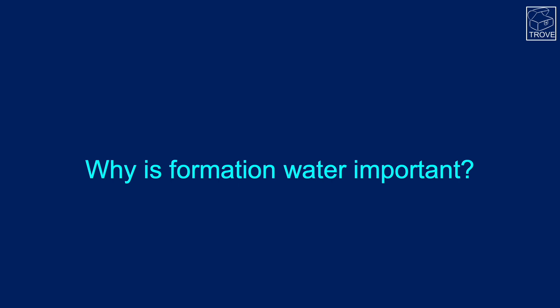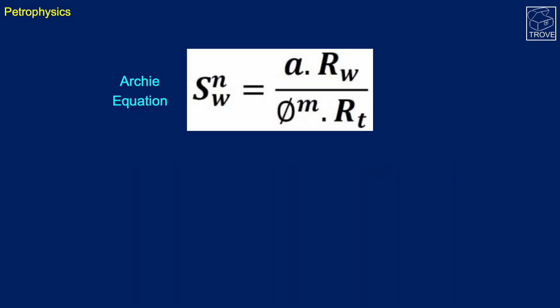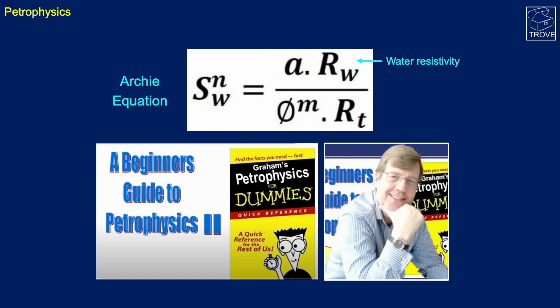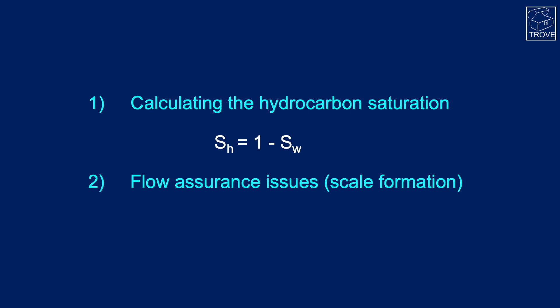So why is Formation Water important? When we're trying to evaluate how much hydrocarbon there is in a reservoir, we use what's called the Archie equation. I'm not going to go into this equation in detail now - suffice to say that the Rw here stands for the resistivity of the Formation Water. For more information, I suggest you go to Graham's website - Graham is a very good friend of mine and he's got a website which teaches petrophysics for dummies, and it's a fantastic site.